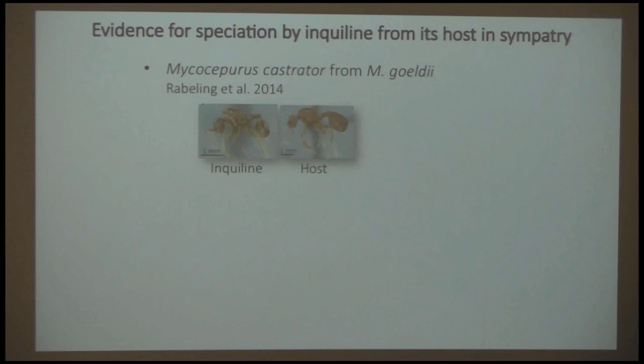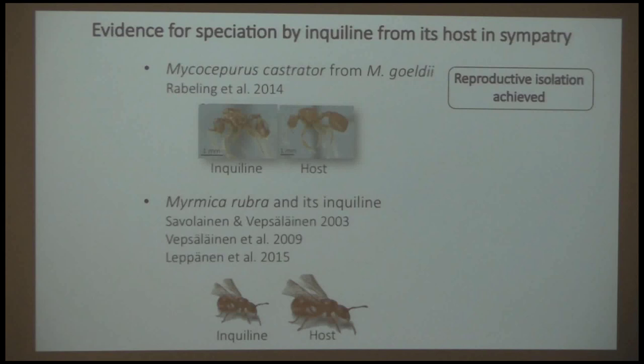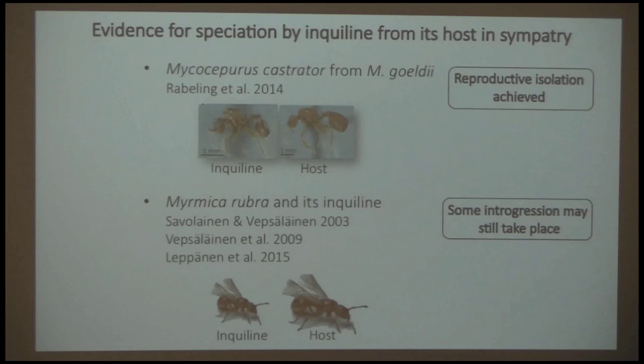The best documented case comes from Mycocepurus castrator, which evolved from its goeldii host — a lower attine fungus-growing ant found in Brazil. Rabeling et al. studied the inquiline and host extensively and concluded that they have obtained reproductive isolation. A second relatively good case comes from our studies on Myrmica rubra and its inquiline, where we have shown genetic divergence but also some introgression — the inquiline and host still hybridize and exchange genes, so they are not totally reproductively isolated.